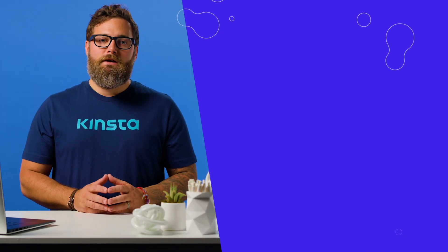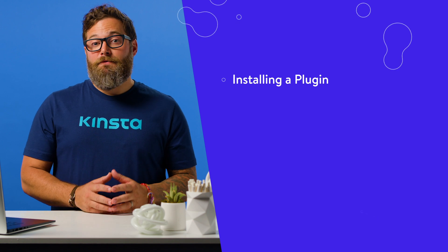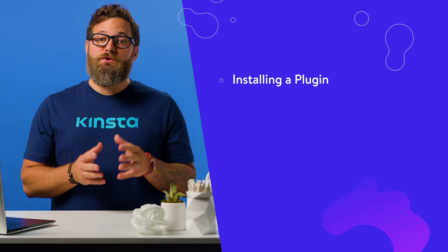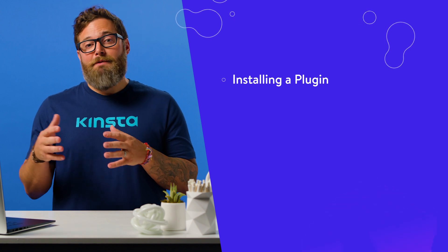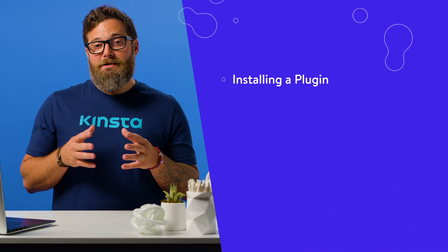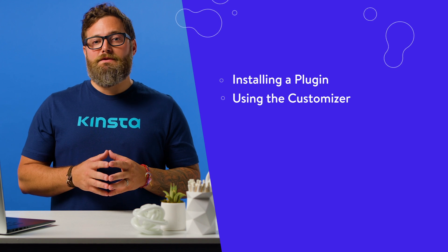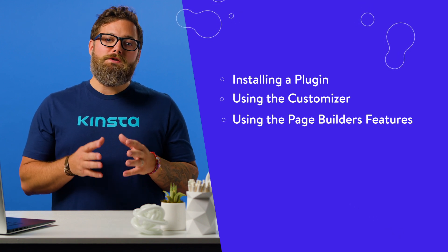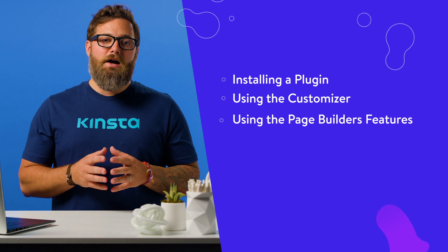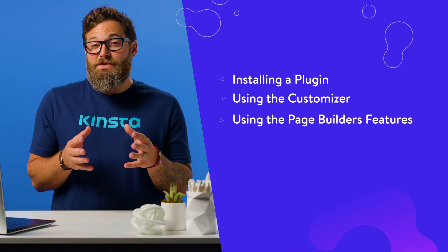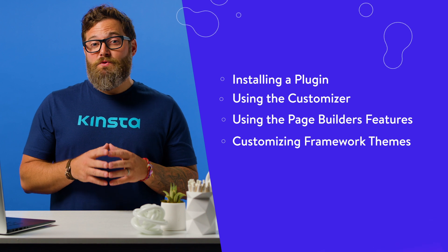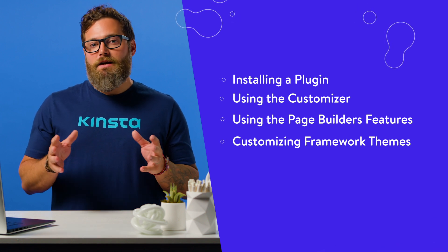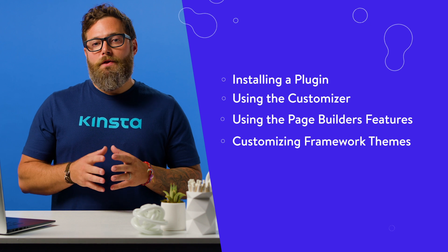Here's what we'll be covering. Installing a plugin — if you want to add functionality to a theme, you'll have to install a plugin. If you're changing fonts, colors, and perhaps the layout of your theme, this can be done with the customizer in your WordPress admin screen. If you're working with a page builder theme, you'll use the page builder's features to customize the design of your site. And if you install a framework theme, you can use one of the available child themes to customize your site, along with any customization options available on the admin screens.